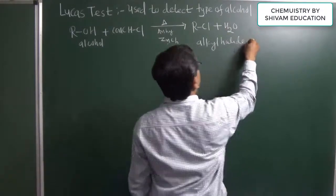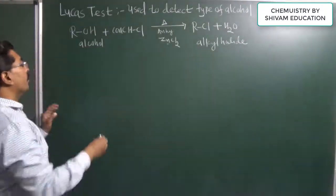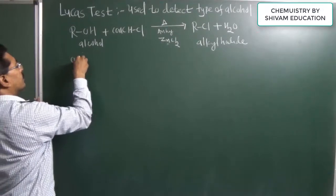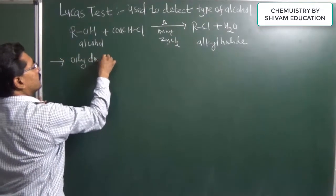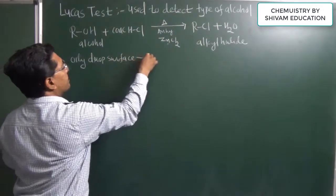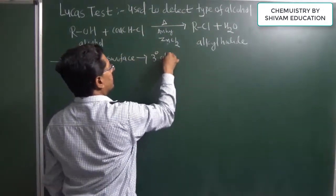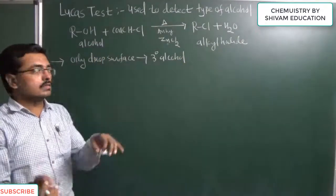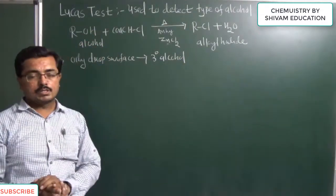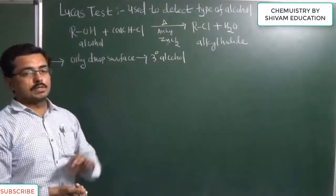Now if we are getting immediately oily drops on surface, if we get oily drops on surface then we can say that the type of alcohol is tertiary alcohol. If you are getting oily drops immediately on the surface by mixing of this reagent then type of alcohol is tertiary alcohol.